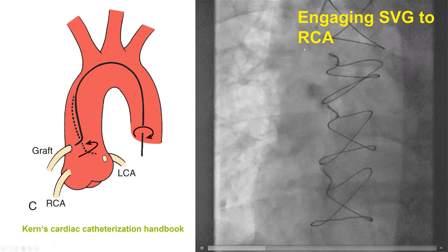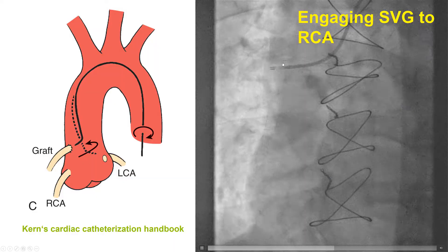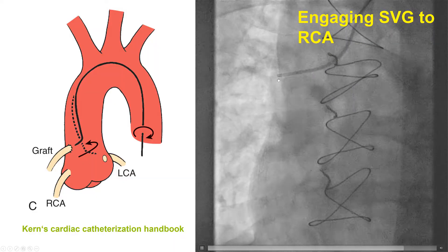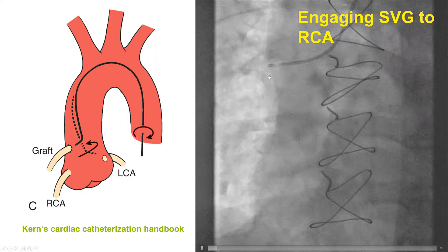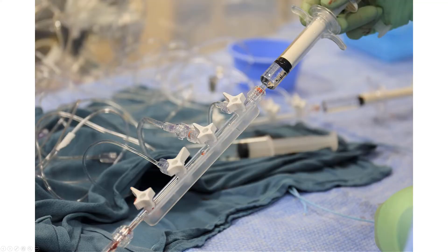This is another example — a small test injection after engaging a bypass graft to the right coronary artery. The test injection actually reveals that the bypass is occluded. Before giving an injection, it is important to hold the manifold vertical so that any potential bubbles in the contrast go to the top and do not come into the line and get injected into the coronary artery.